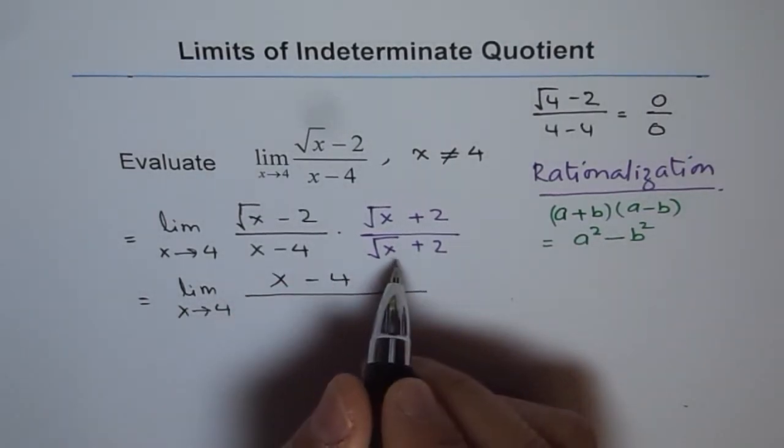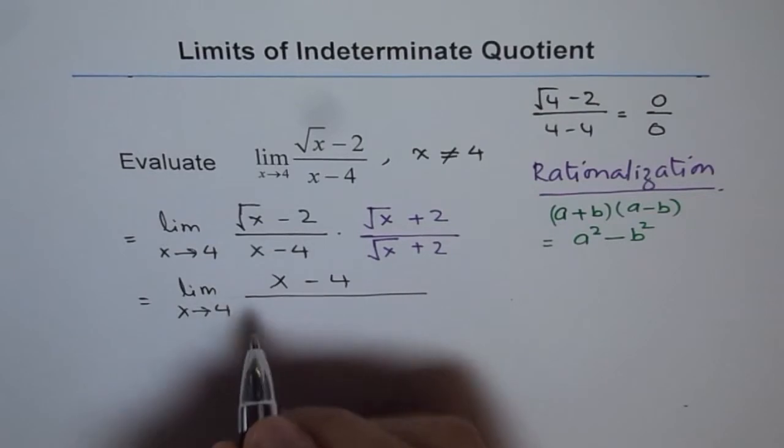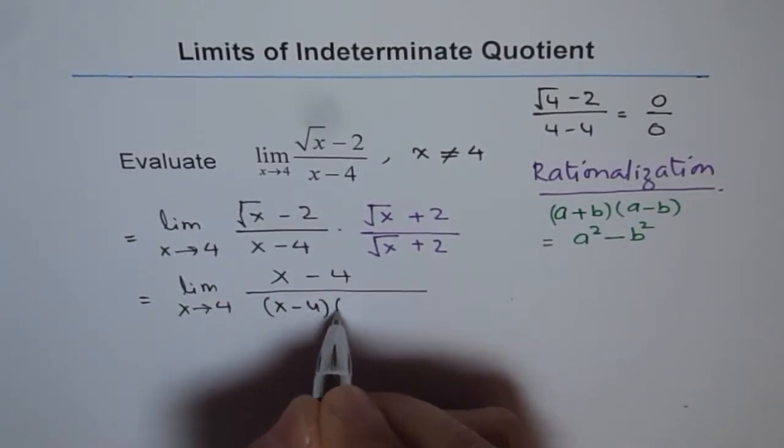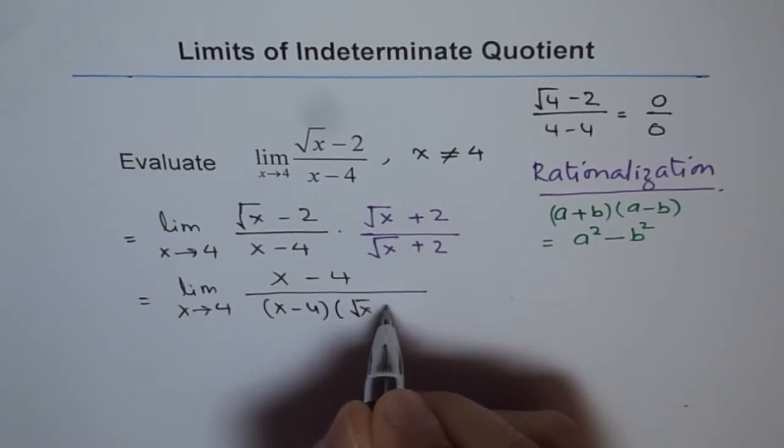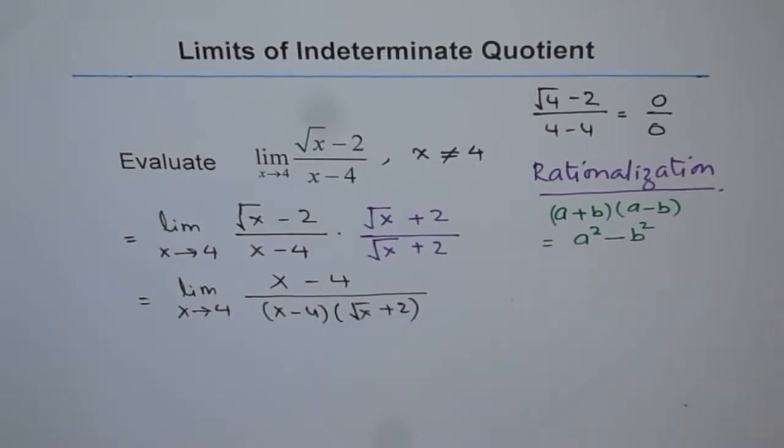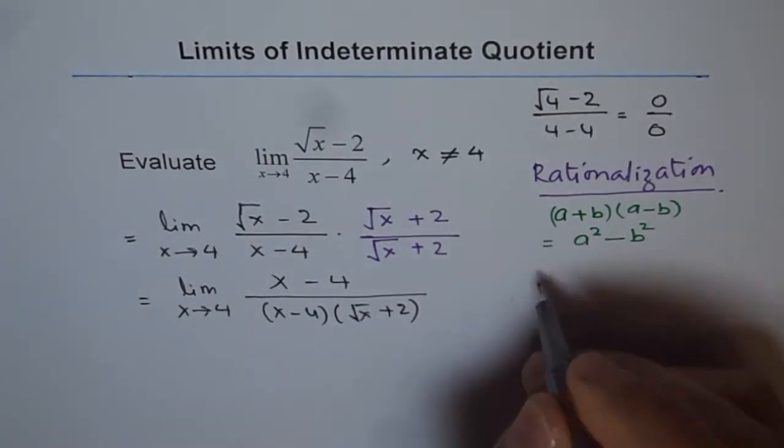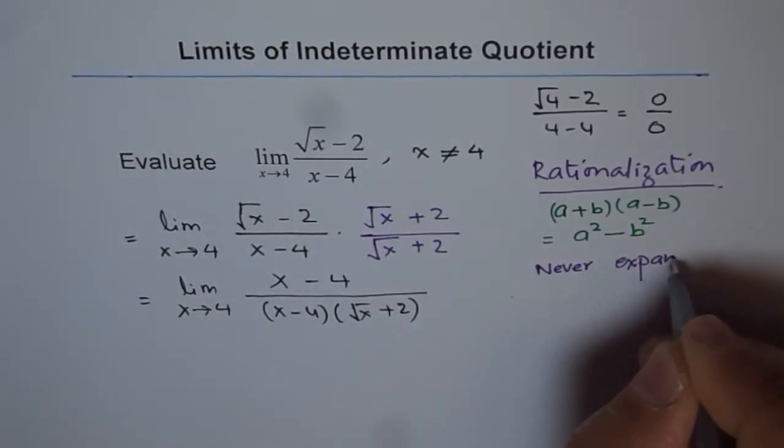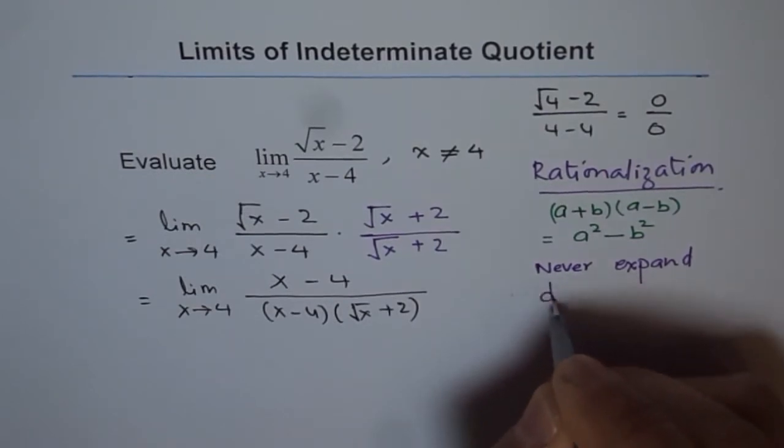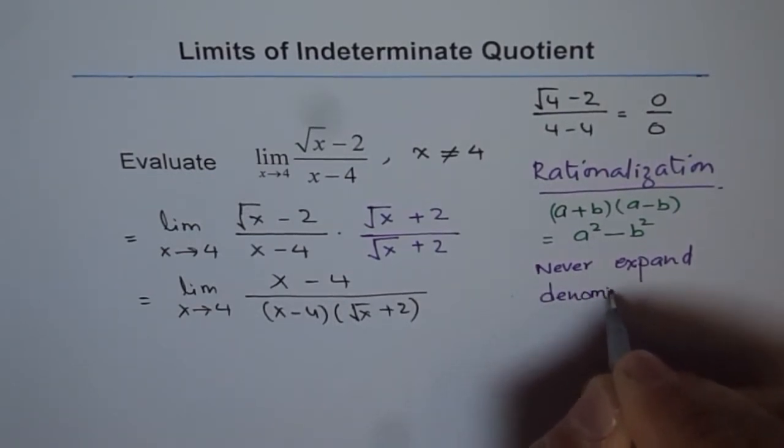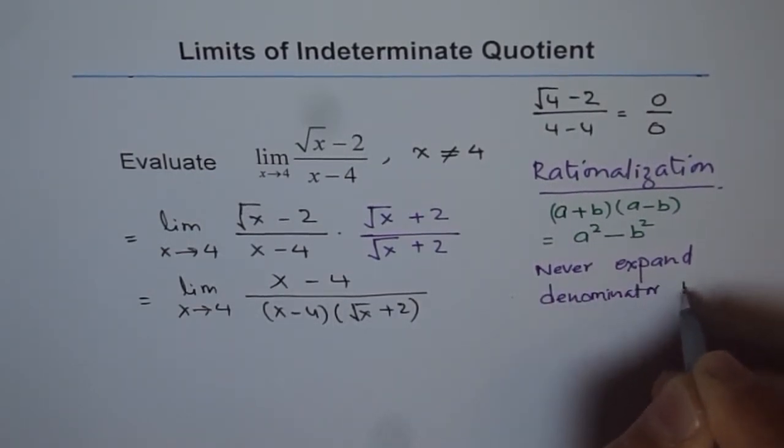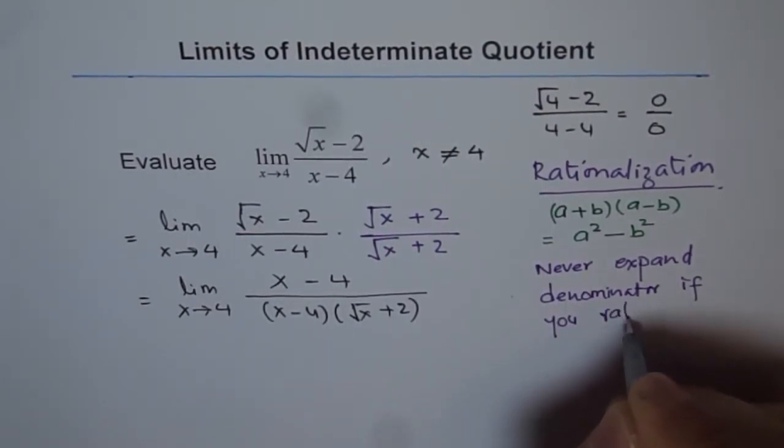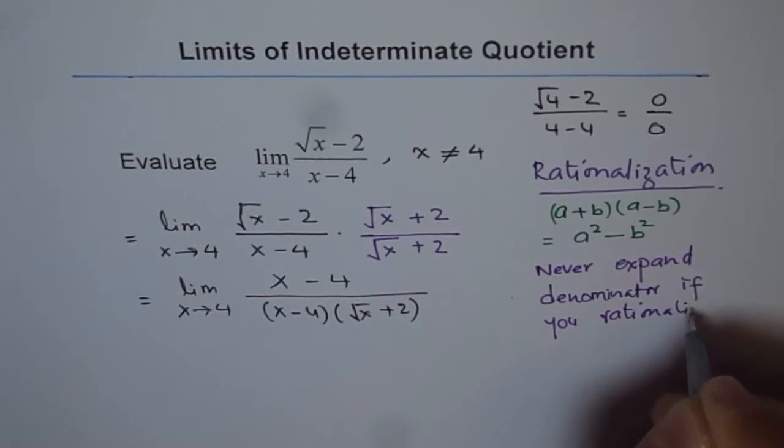In the denominator, I will suggest never to multiply or expand, okay? Write denominator as such. So, we will write this as x minus 4 times square root of x plus 2, right? So, as a precaution, never expand denominator.